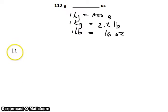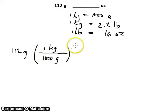Now we can proceed with the solution. 112 grams multiplied by the first conversion factor: 1 kilogram is equivalent to 1000 grams. Then multiply it by the next conversion factor.